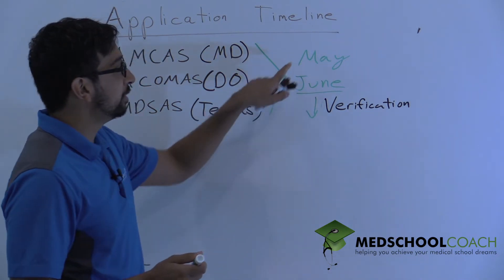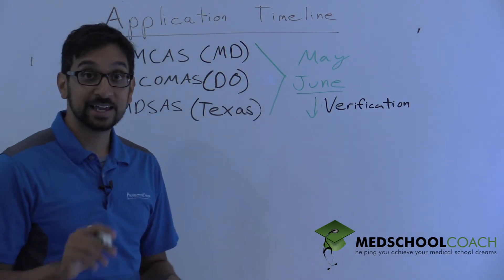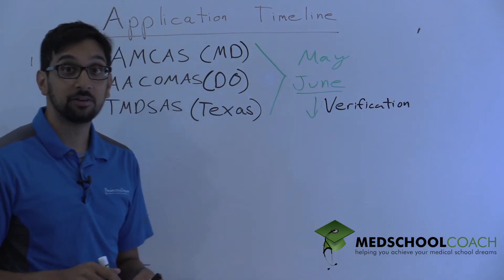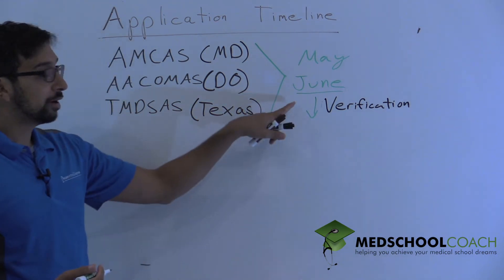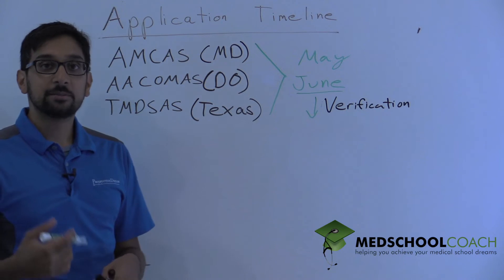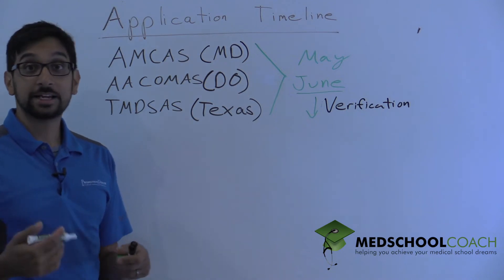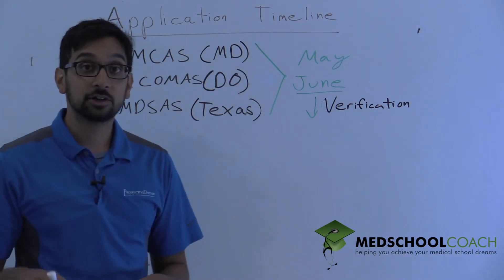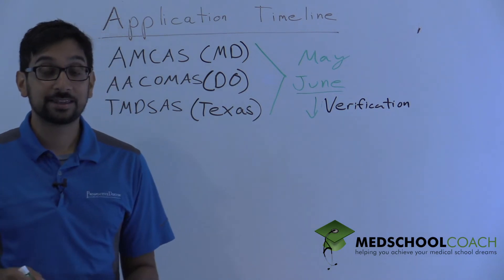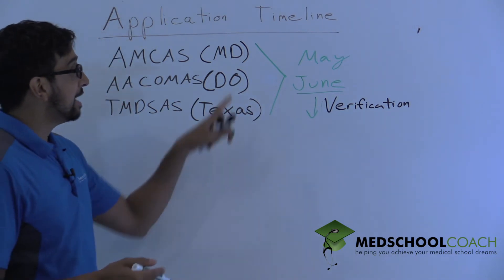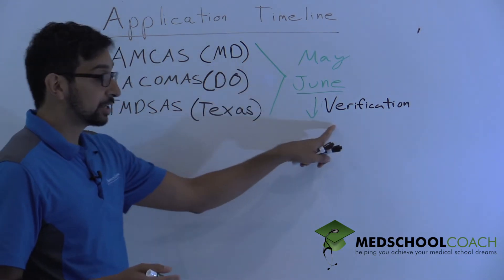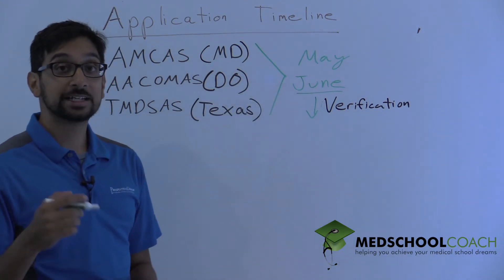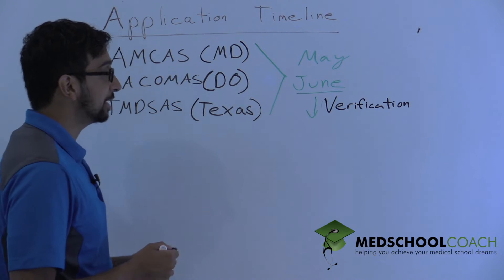Between May and June, one of the important things is that you want to send in your transcripts to the application so that they're ready to go. You don't want to wait until June to send those in because then you're delaying your application even more. For example, if you submitted your application on June 1st but your transcripts didn't get there until June 15th, AMCAS cannot start verifying your application until that time. That's why it's so important to get your transcripts in as early as possible.